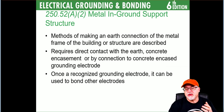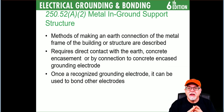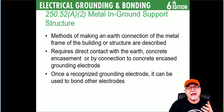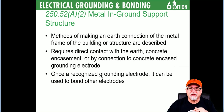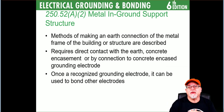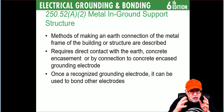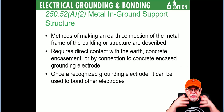250.52(A)(2) is the in-ground support structure — literally the metal framing driven down into the earth. Making a connection to the metal frame of the building requires direct contact with the earth or concrete encasement. Once recognized as a grounding electrode, it can be used to bond other electrodes. There's a lot of surface area in contact with the earth — if a ground rod is acceptable, this metal building support system certainly qualifies.